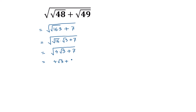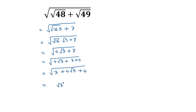This can be rearranged. We can write 7 as 3 plus 4, and then rearranging these terms we can write this as (√3)² plus 4√3 plus 4, which fits the pattern a² plus 2ab plus b².